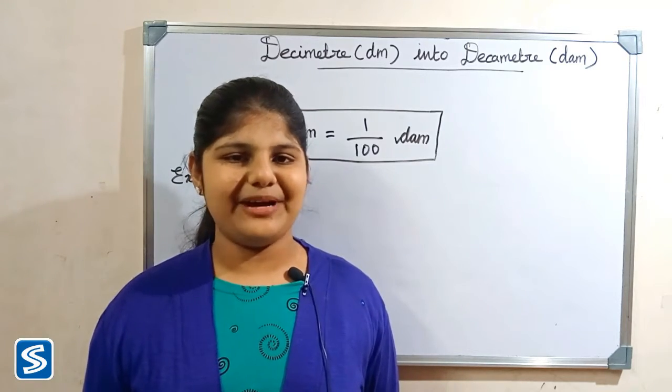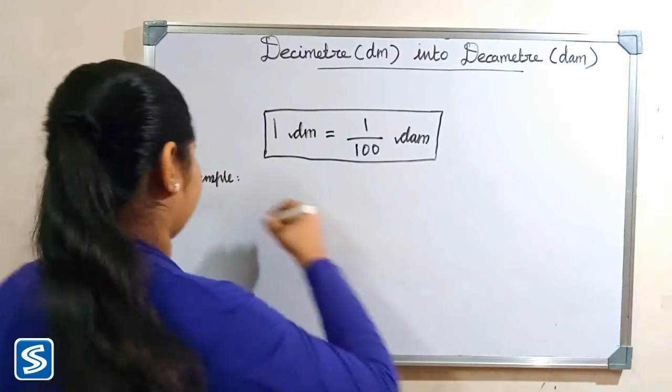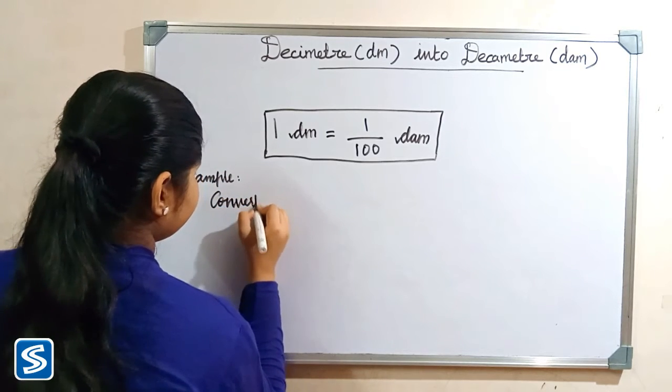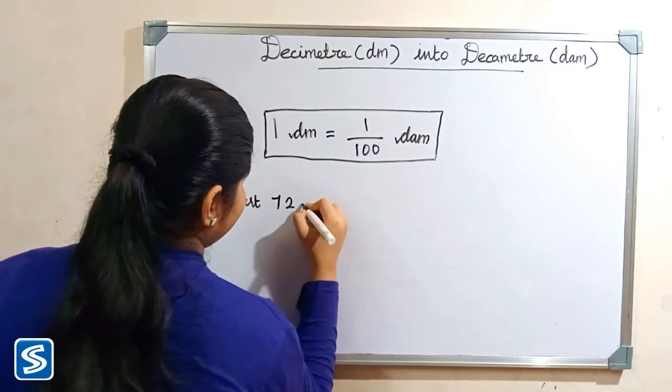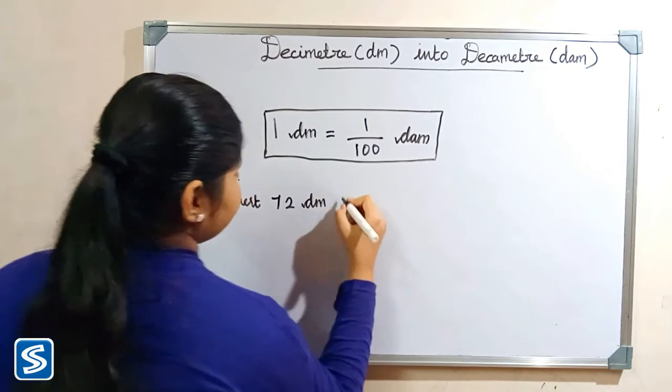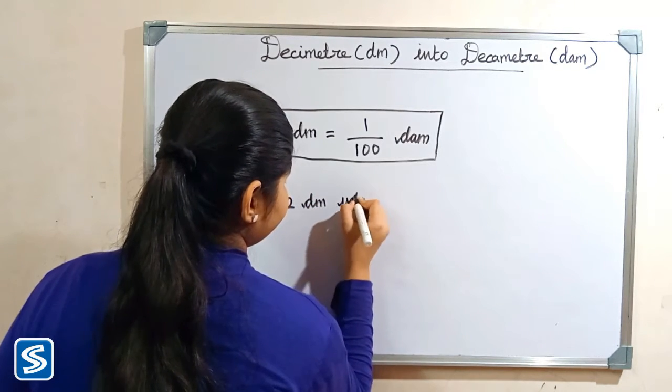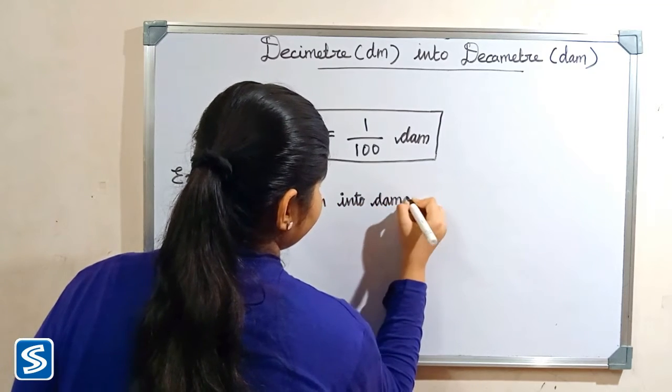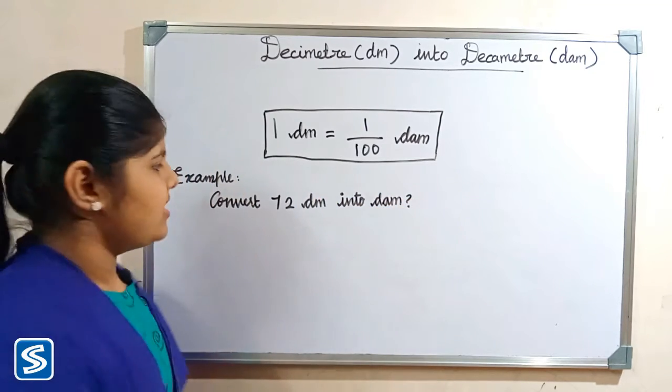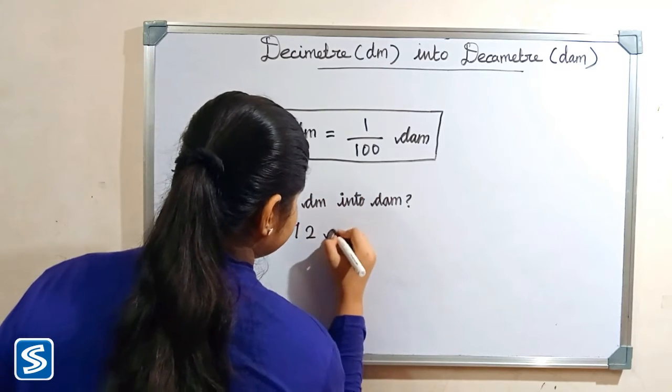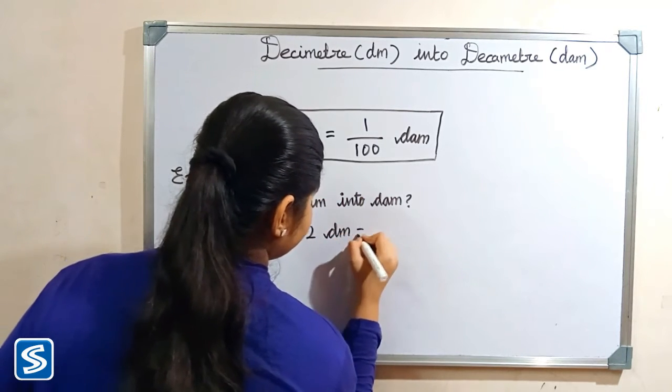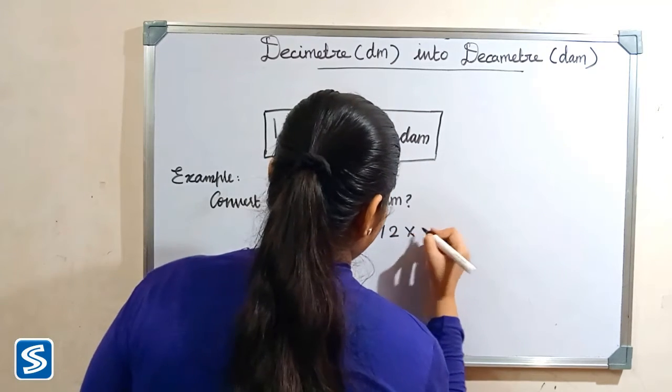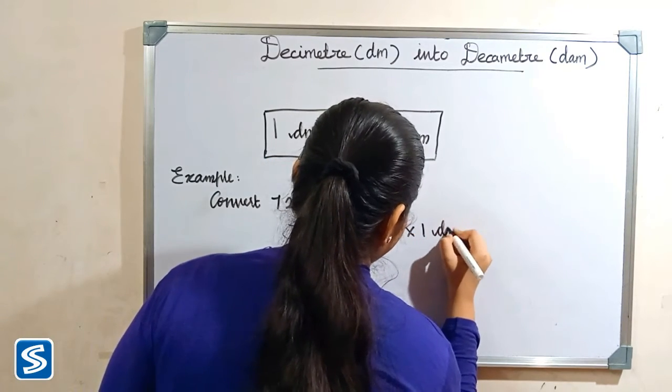Now we will take one more example. Convert 72 decimeter. So 72 decimeter can be written as 72 multiply 1 decimeter.